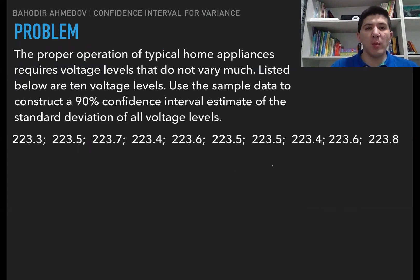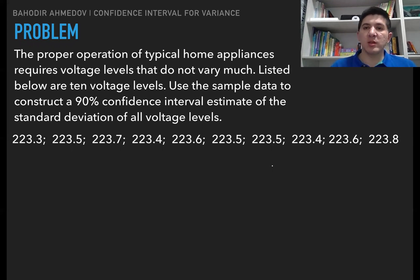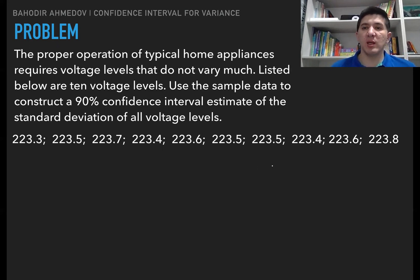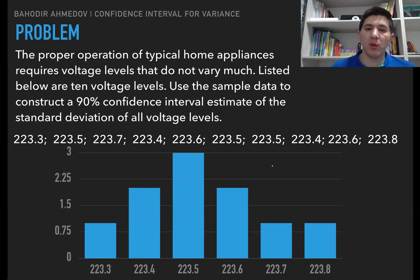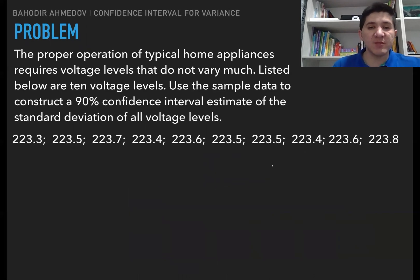Let's do an example. The proper operation of typical home appliances requires voltage levels that do not vary too much. Listed below are 10 voltage levels; using the sample data, construct a 90% confidence interval to estimate the standard deviation of all voltage levels for the whole year. First, check whether the population has a normal distribution. Drawing a histogram of the sample gives a distribution that looks very much like a normal distribution, so we can apply our technique.